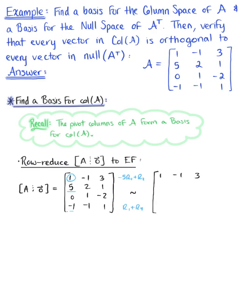This leaves us with the equivalent matrix: row 1 is 1, -1, 3; row 2 is 0, 7, -14 (since -5+5=0, 5+2=7, -15+1=-14); row 3 remains 0, 1, -2; and row 4 becomes 0, -2, 4 (since 1-1=0, -1-1=-2, 3+1=4). Our first column is all set, and now we move to the second pivot position to eliminate entries below it.